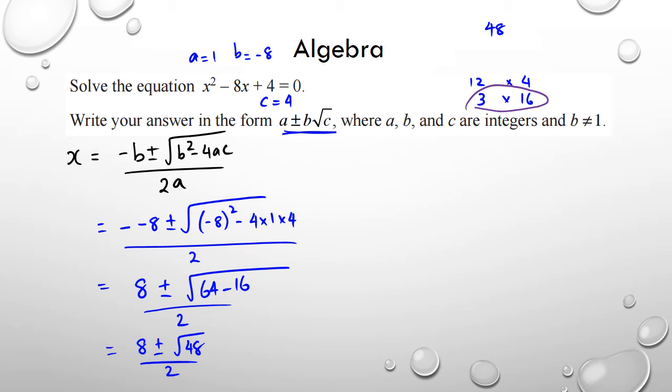I could rewrite this as 8 plus or minus square root of 16 times 3, divided by 2. Which means I can write this as 8 plus or minus square root of 16 is 4, 4 root 3 over 2.